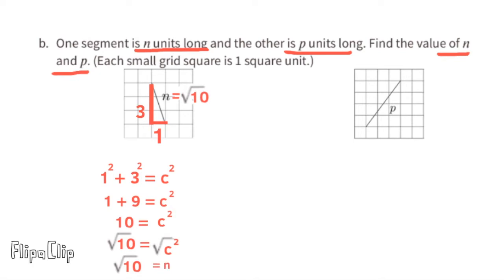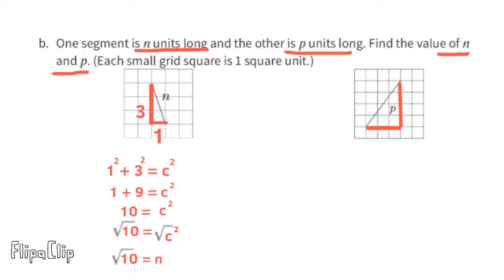For the next grid, we're given line p. Let's make a right triangle out of it. One imaginary side length is 3 units and the other is 4 units. Using a squared plus b squared equals c squared, we get 3 squared plus 4 squared equals c squared, or p squared. Three squared is 9, four squared is 16, and since 9 plus 16 is 25, c squared equals 25.